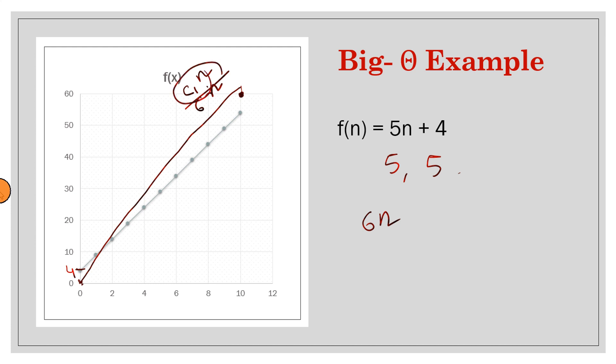You can also take 4n. Then its slope will be less than the original running time. This is our original running time. 6n is more than this, 5n; 4n is less than this.